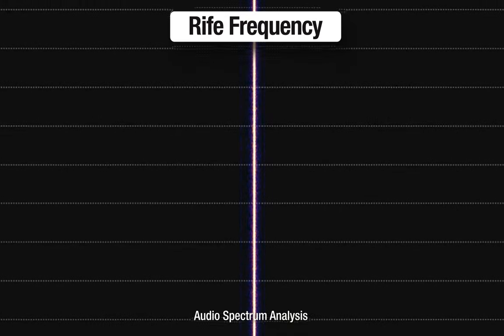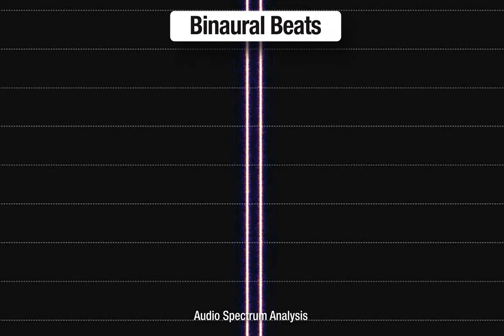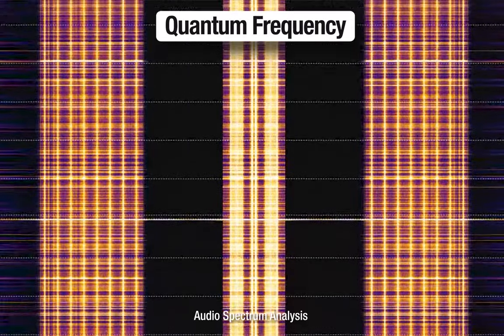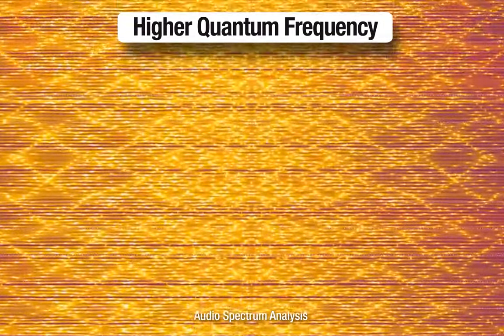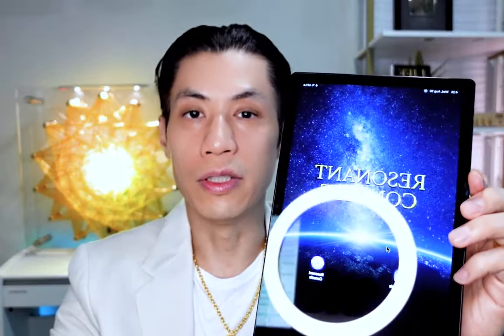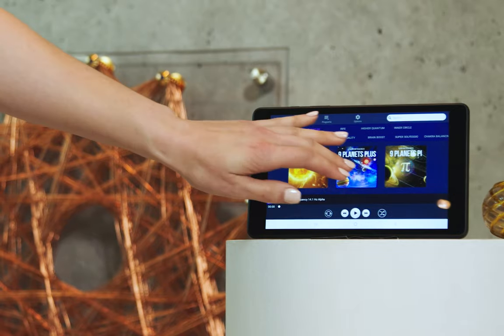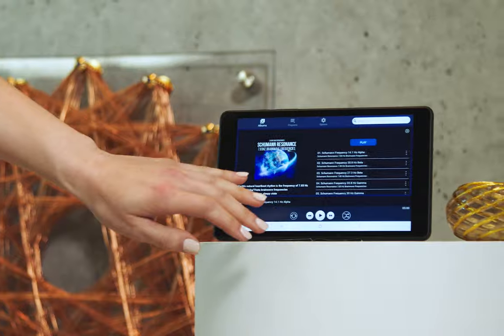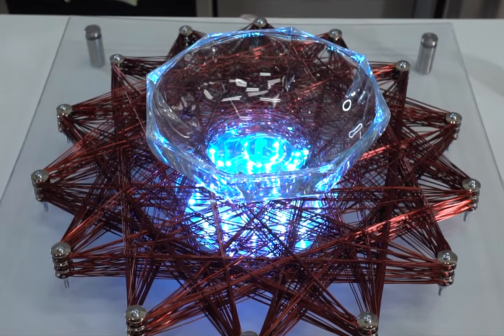What you're seeing here is an audio spectrum analysis software. The right frequency has one dimension, binaural beats two dimensions, and our higher quantum frequencies have four dimensions — you can see how much more complex and how much more information is coming out of these frequencies. With the QiCoil Aura systems, you get all these frequencies accessible through a tablet called the Resonant Console. Super simple to use — just search the frequency you want, press play, and it's broadcasting. The frequencies are so powerful you can just listen to them with sound alone and get benefits, or you can play them through the coils for silent magnetic energy, or do both at the same time.